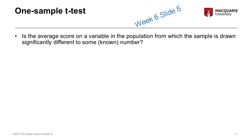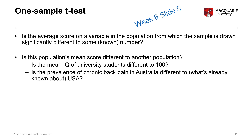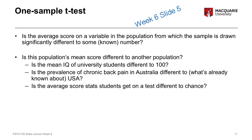The one sample t-test looks to see if the average score on some particular variable — in the population from which our sample was drawn — is significantly different to some other number. We're looking at one variable at a time and comparing that mean score to some other mean. For example, we could compare the mean IQ score of university students to 100, the community average, or compare the average score students get on a test to chance level, say 50% on a two-option multiple choice test.